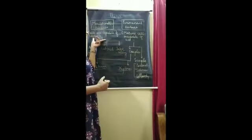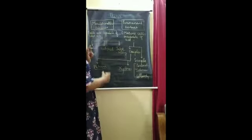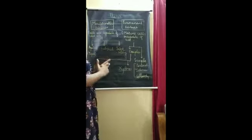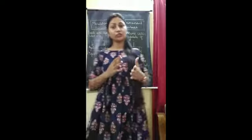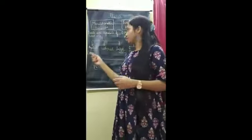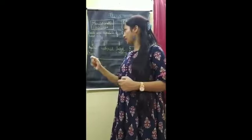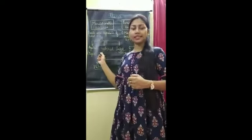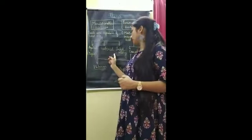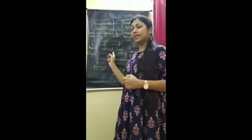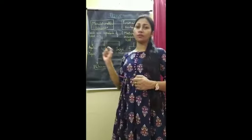The first type is meristematic tissues. Meristematic tissues can be further divided into three types: apical, lateral, and intercalary.